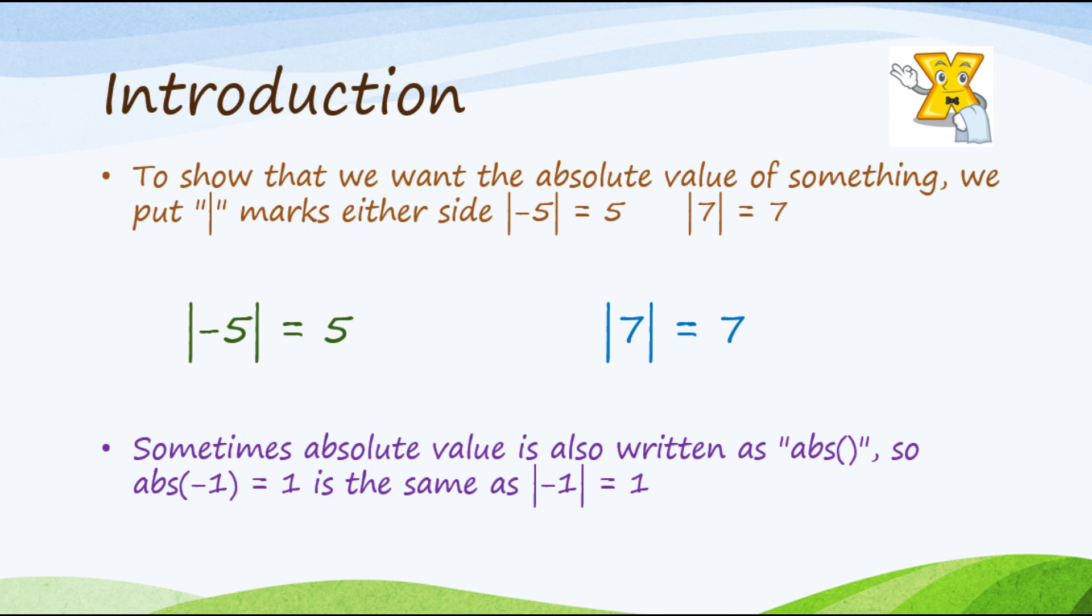So paano ba natin pinapakita ang isang absolute value ng number? For example, you have negative 5. Alagyan mo siya ng dalawang vertical bar sa paligid niya. Ang ibig sabihin na nito ay kukunin natin yung absolute value ng negative 5. So ang sagot ay 5. Same with the second example. Paano naman kung gusto mo kunin yung absolute value ng 7? So lagyan mo ng dalawang vertical bar yung paligid ng 7. Sa magiging sagot niyan ay 7.